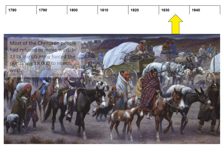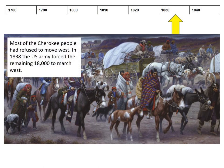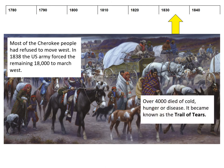One of the last tribes to move west was the Cherokee. Most Cherokee had refused to move west, but in 1838 the US army forced the remaining 18,000 Native Americans to march west. That march over hundreds of miles was horrific, and over four thousand of the 18,000 Cherokee died on that march because of cold, hunger, or disease. That march became known as the Trail of Tears, and it is one of those key examples that shows the extent to which the US was trying to crush and remove the indigenous people of North America.